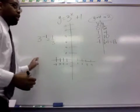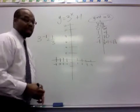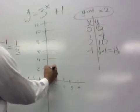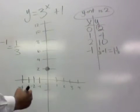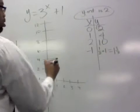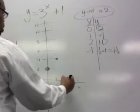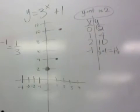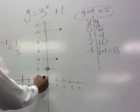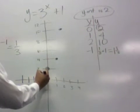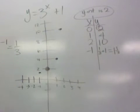So we can graph that. Let's start by plotting our points. We have 0, 2. We have 1, 4. We have 2, 10. And we have negative 1 and 1 and 1 third. 1 would be halfway somewhere, and 1 third would just be a little above that.